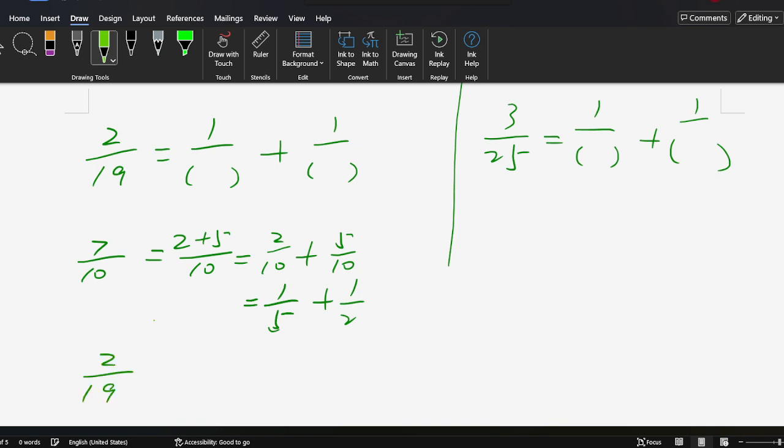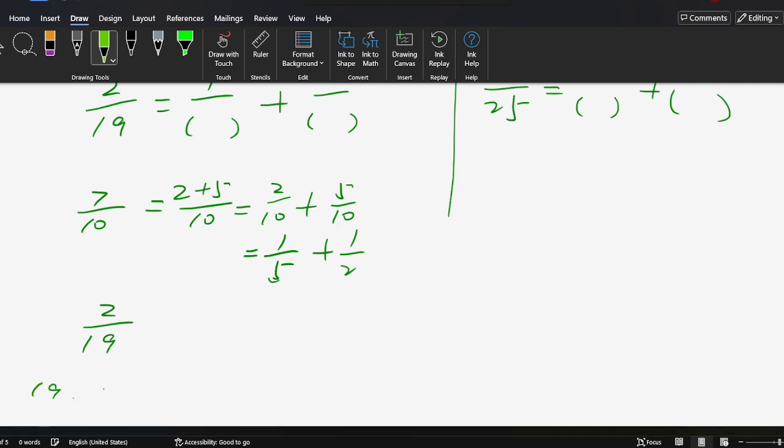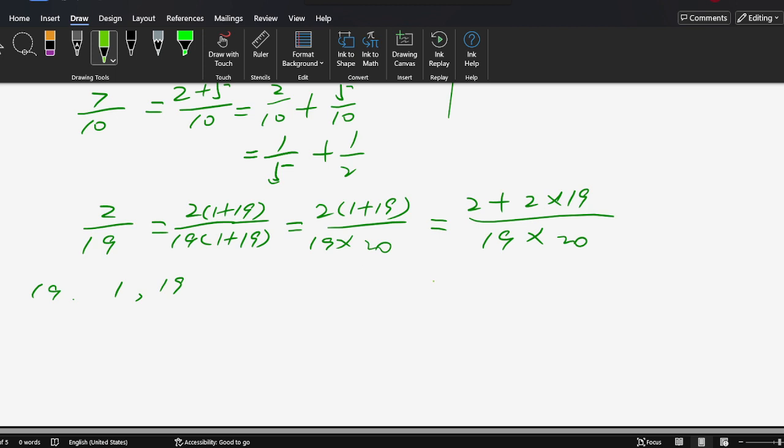For 2/19, the factors of 19 are 1 and 19. So we calculate: 2/19 times (1+19)/(1+19) equals 2(1+19)/(19×20), which equals (2 + 2×19)/(19×20).